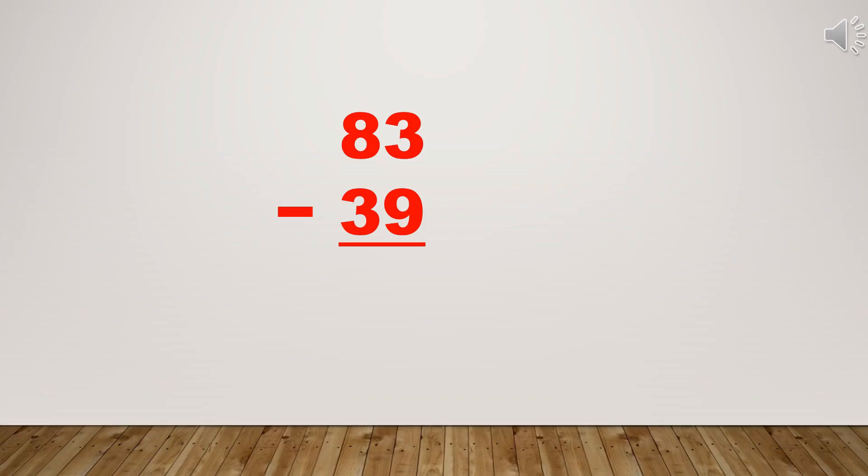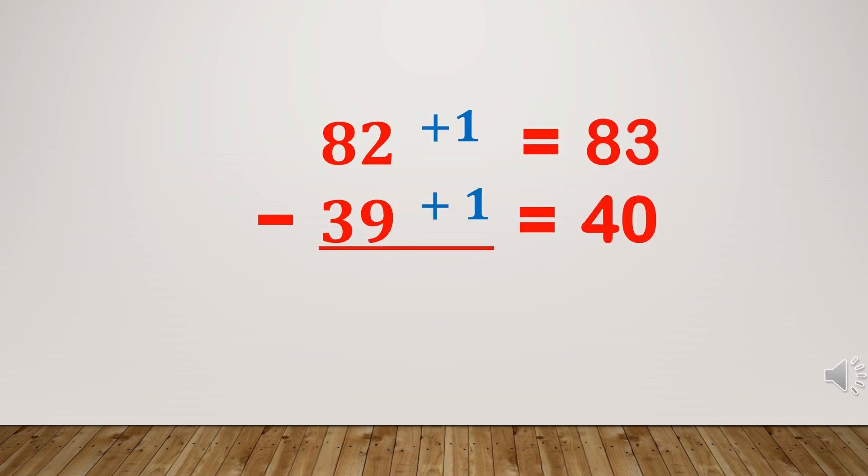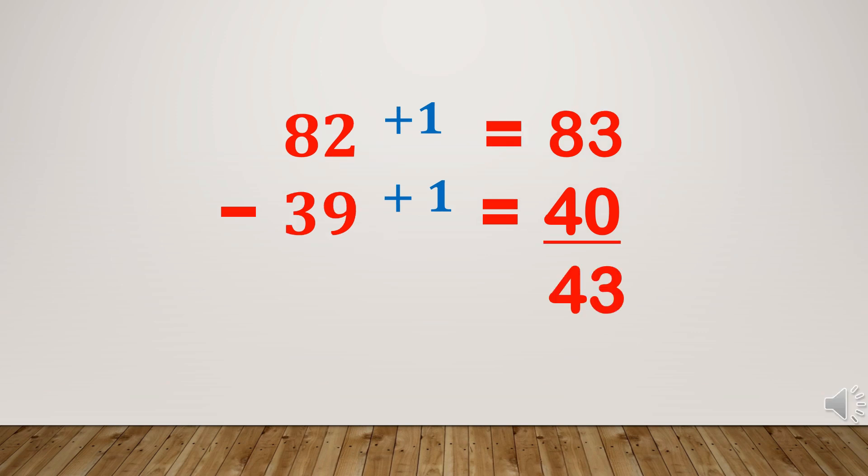To make the subtraction easier, we will make 39 to 40. Add 1 to 39 to make it 40. Add also 1 to 82, it will make 83. So it will now be easy to subtract. 83 minus 40 will be 43.